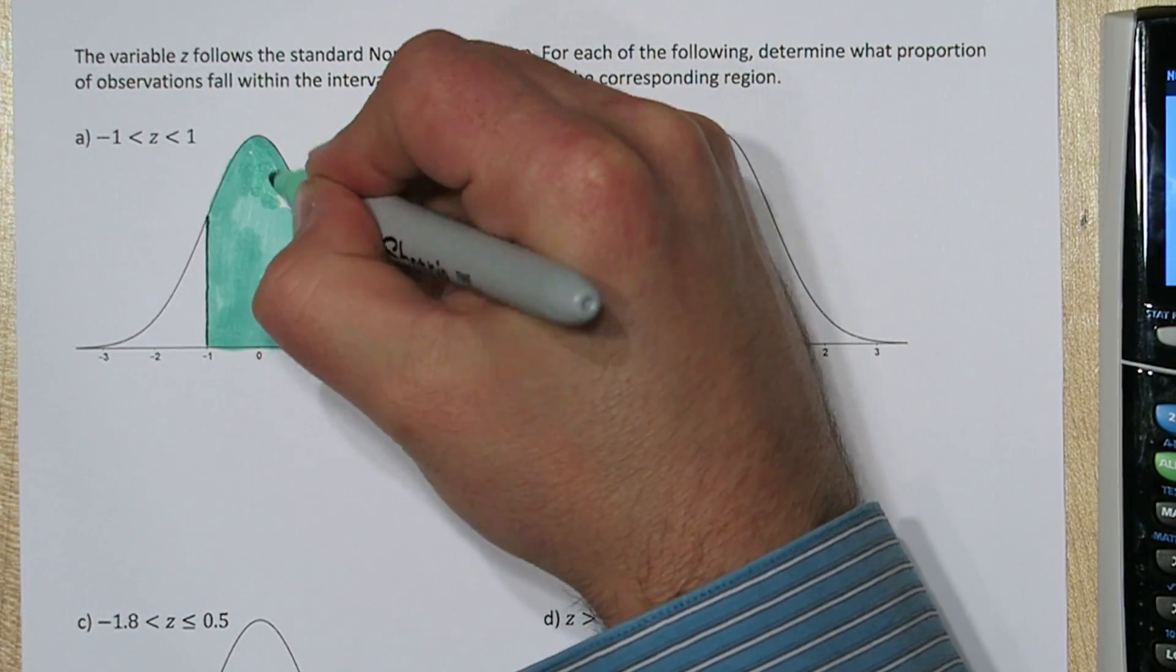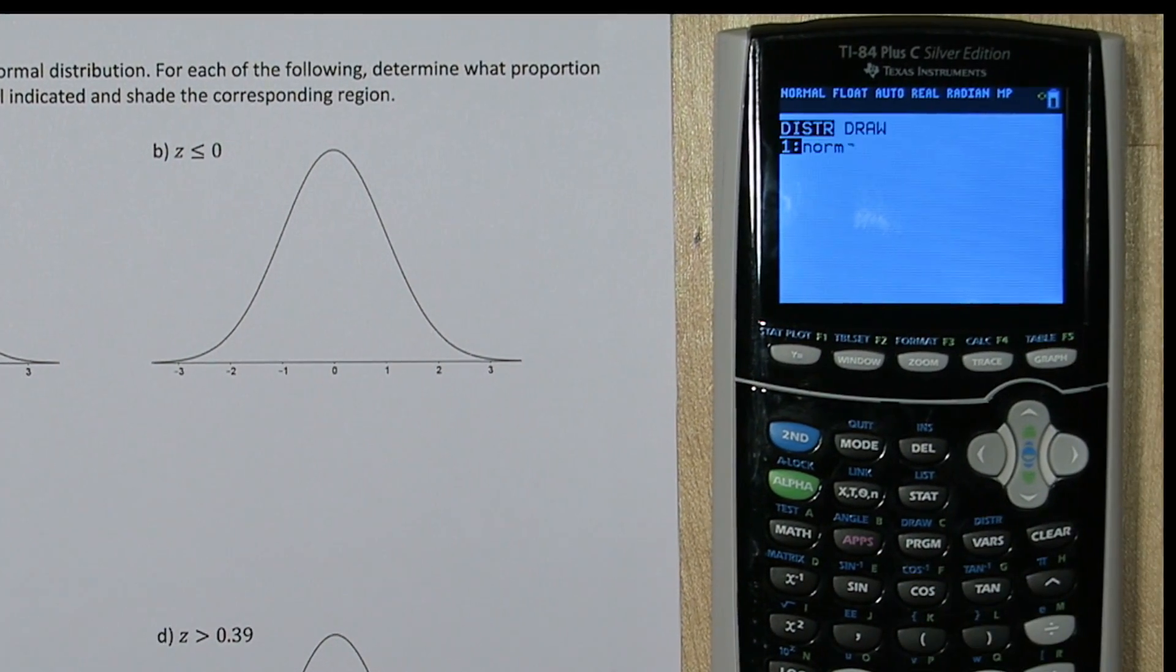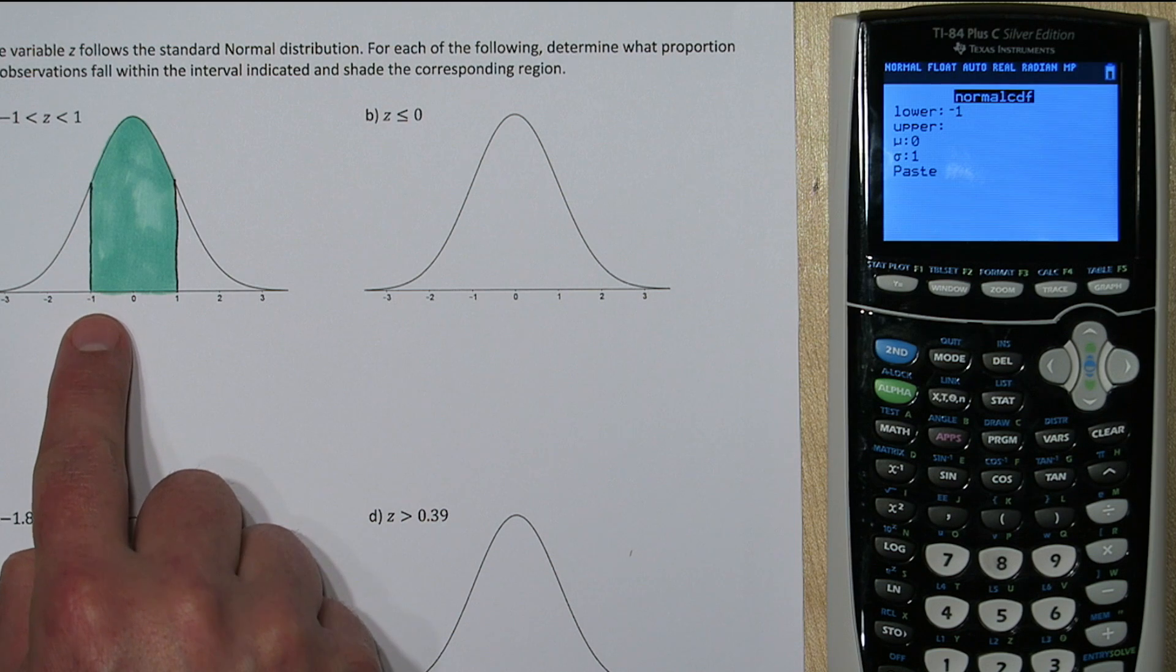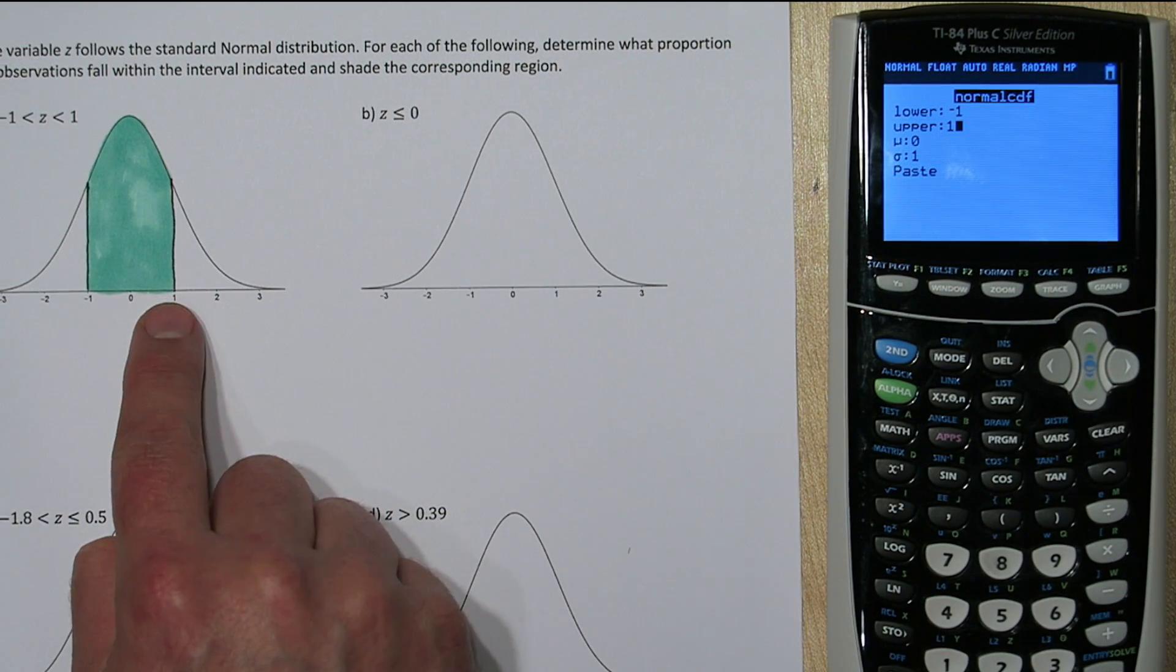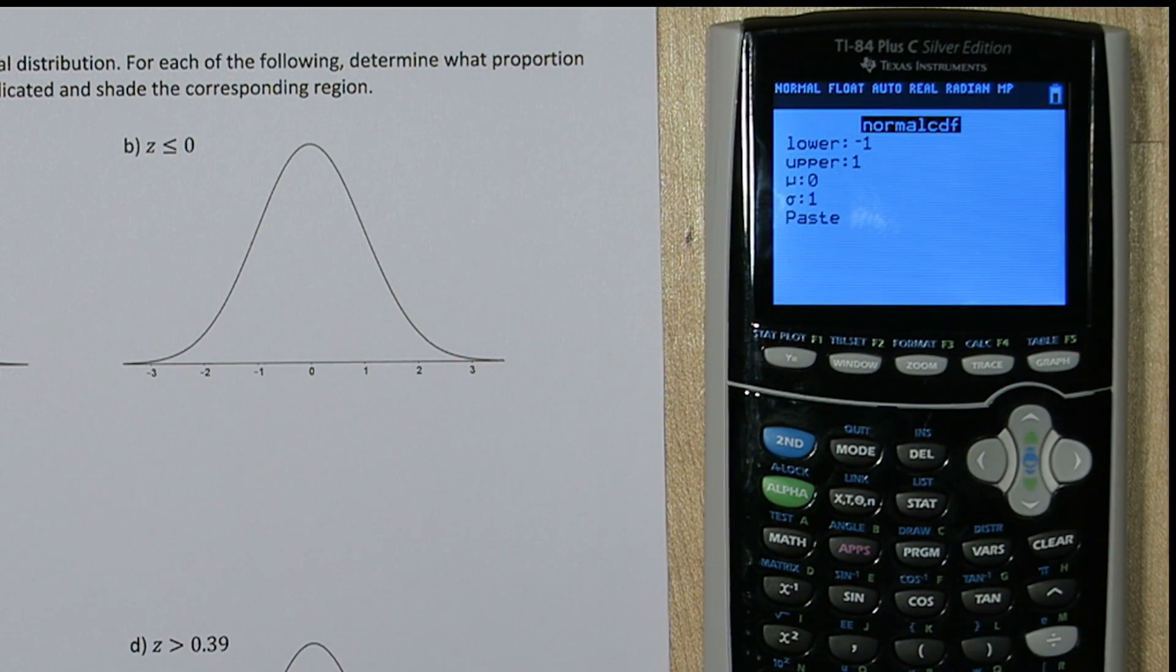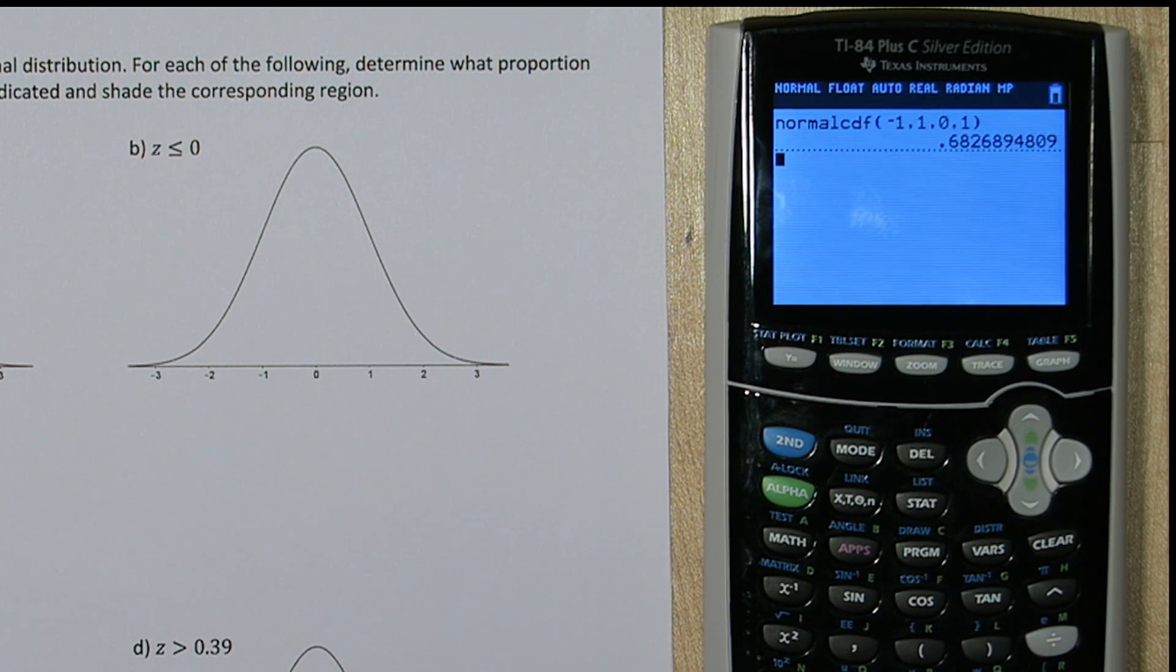The empirical rule tells us it's 68%, but let's calculate it exactly. We're going to use a function called normalcdf. If you press second and vars on your calculator, go down to the second option, normalcdf. It asks what do you want for your lower limit? Negative 1, that's the left end of our shaded region. For upper, we're going to put positive 1, which is our right end of our shaded region. We're going to leave the mean and standard deviation as 0 and 1, which is the standard normal distribution, which is what z follows.